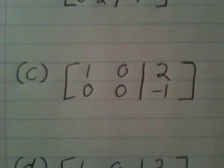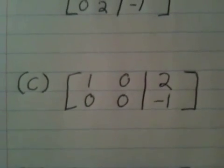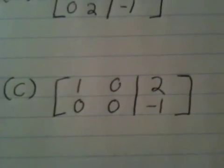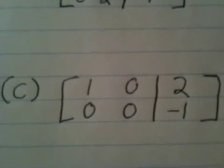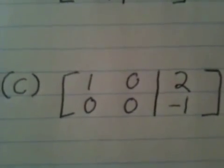In our third matrix, C, we have 1, 0, 2 in the top row and 0, 0, negative 1 in the bottom row. The first non-zero number in the top row is 1, but the first non-zero number in the bottom row is negative 1. So this is also not a matrix in reduced row-echelon form.